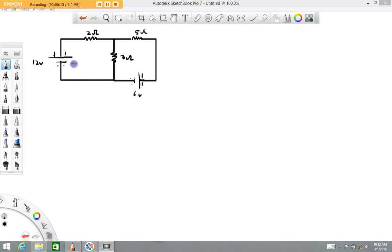So what we're looking at here is a circuit. We got a 12 volt battery source, a 6 volt source, a 3 ohm resistor, a 5 ohm resistor, and a 2 ohm resistor.